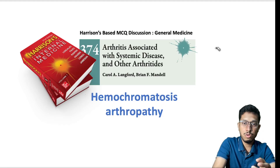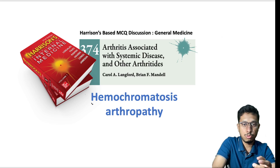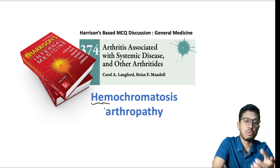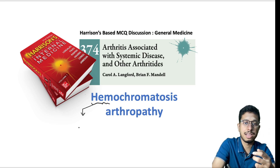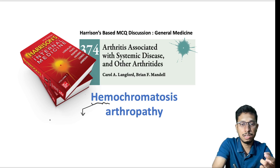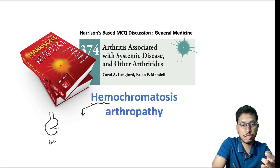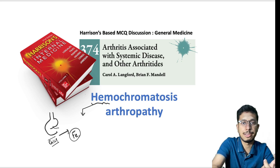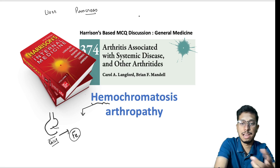Hemochromatosis is due to iron excess. There is a mutation in the iron channel in the gut, which leads to increased absorption and accumulation of iron in the body — in the liver causing cirrhosis, in the pancreas causing diabetes, in the skin causing pigmentation, and in the joints as well.